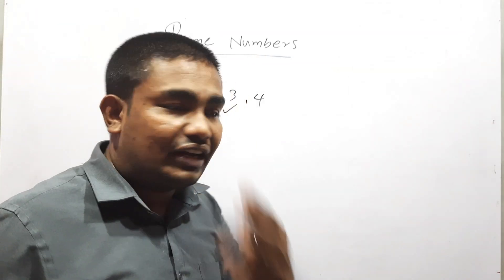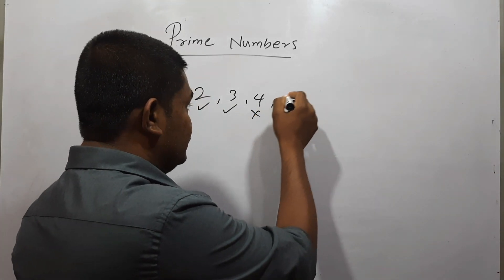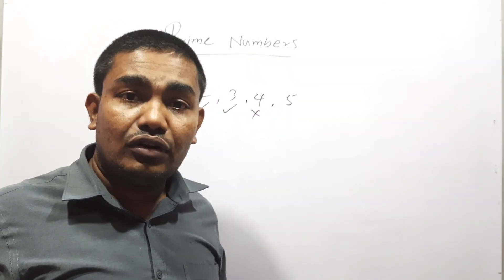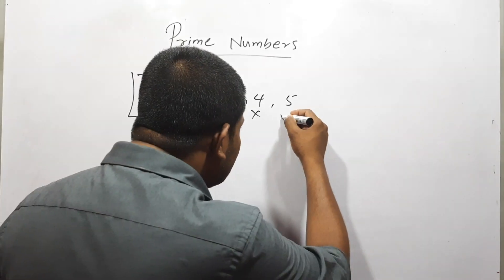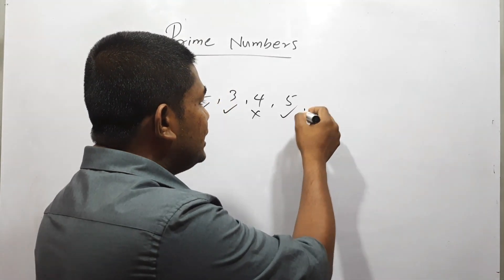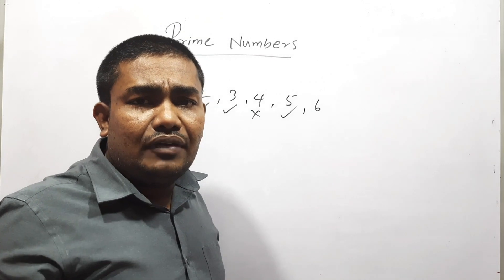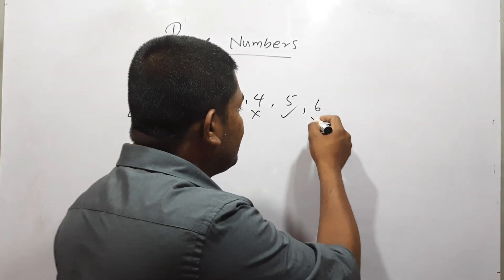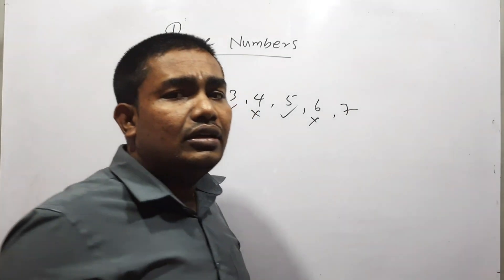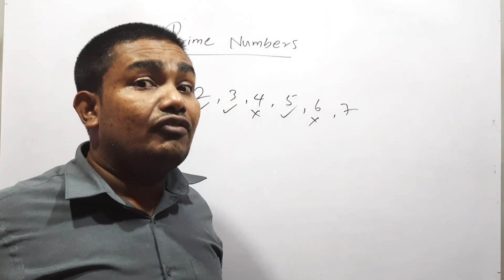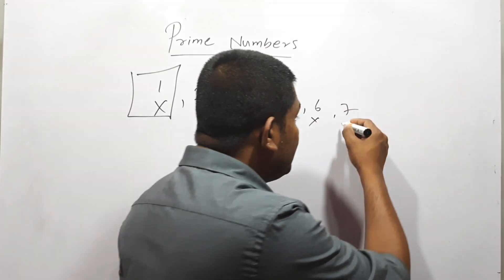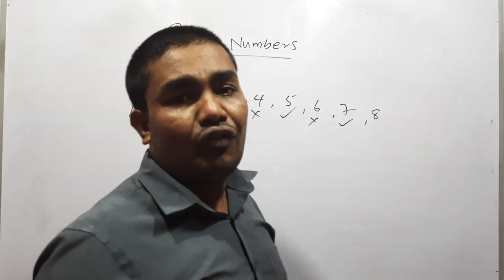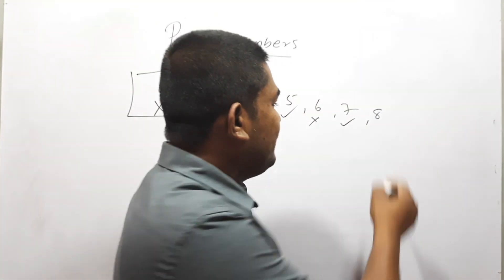For 4, there are 3 factors, therefore this is not a prime number. 5 — we can divide by 5 and 1 only, therefore 5 is a prime number. 6 — we can divide by 3, 6 and 1, there are 3 factors, therefore 6 is not a prime number. 7 — we can divide by 7 and 1 only, therefore 7 is a prime number. 8 — there are 4 factors, therefore 8 is not a prime number.